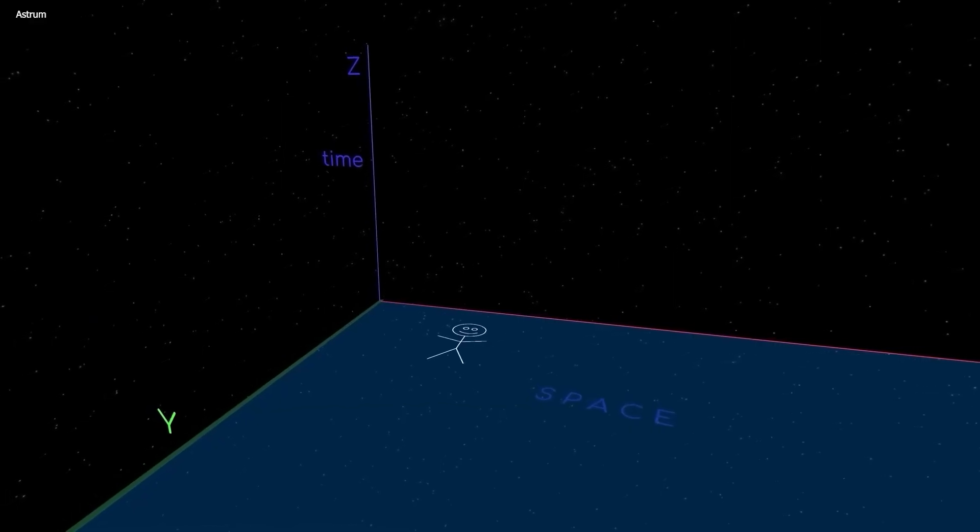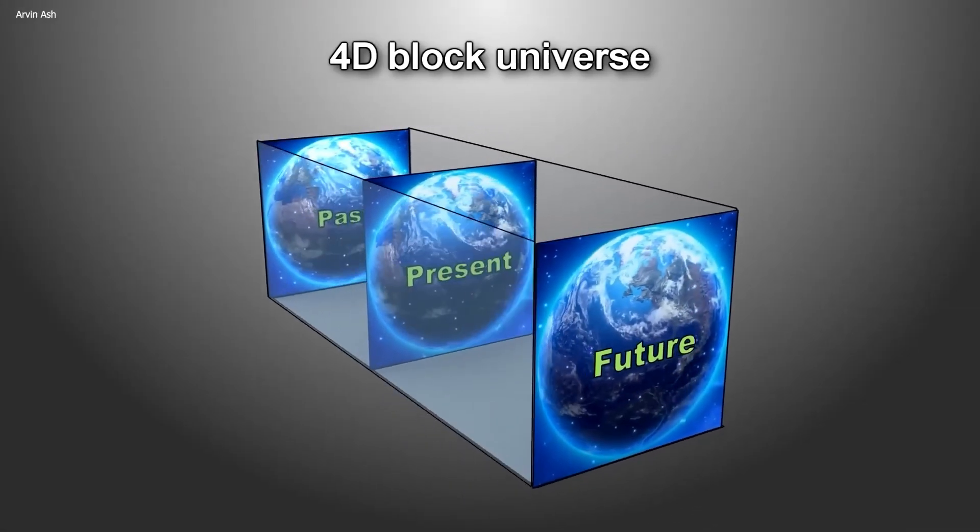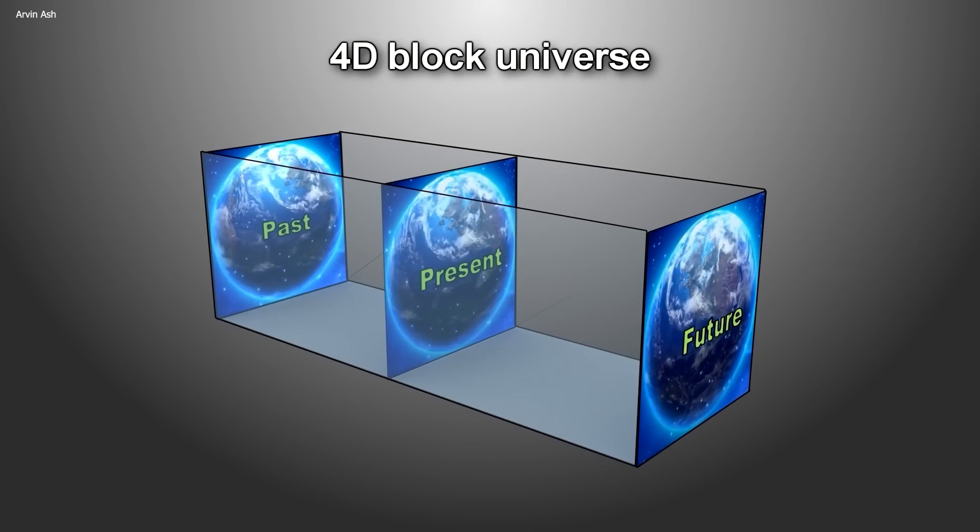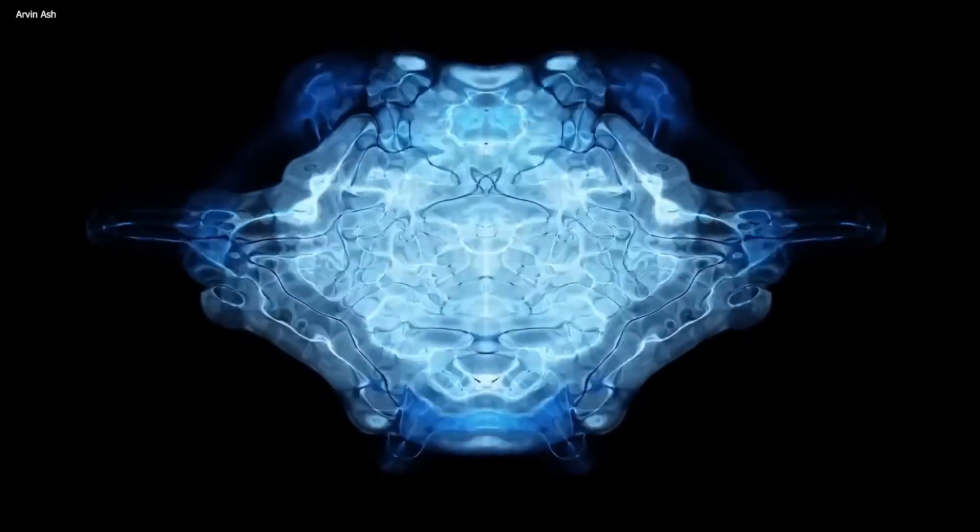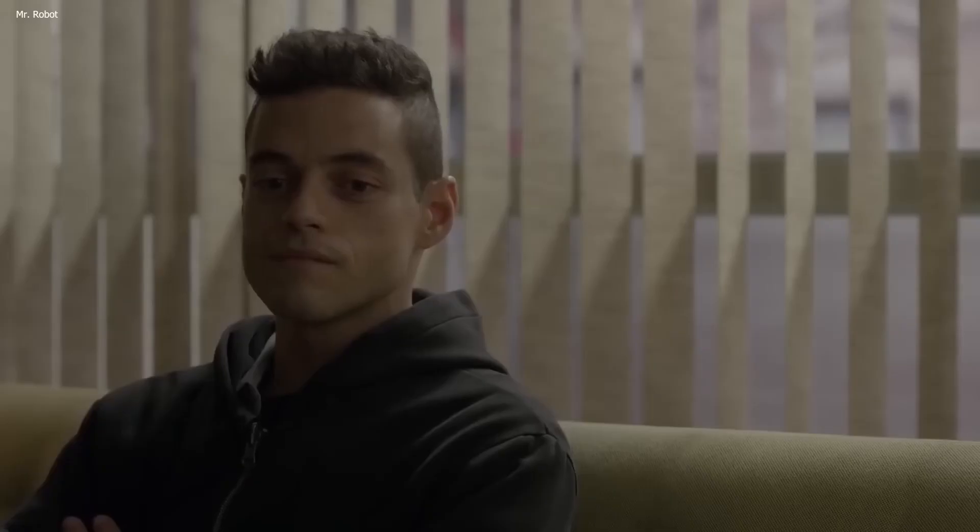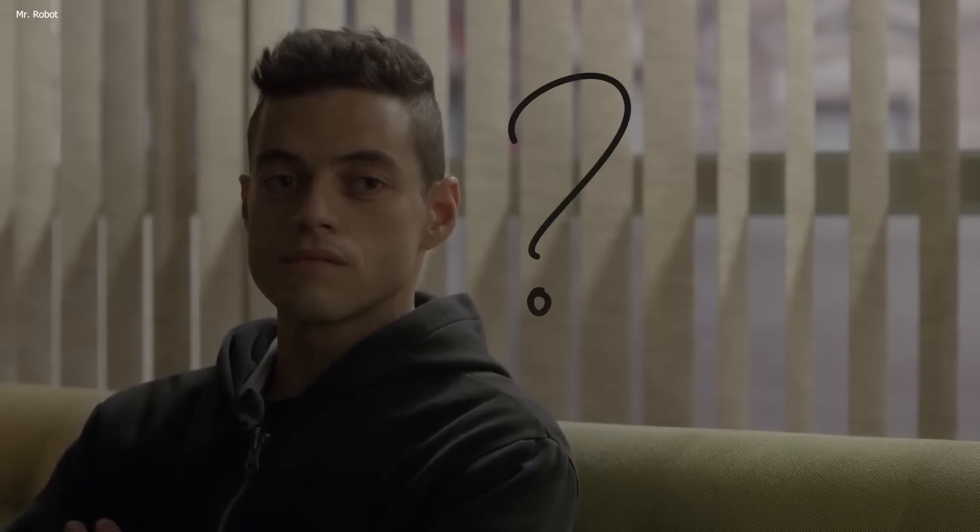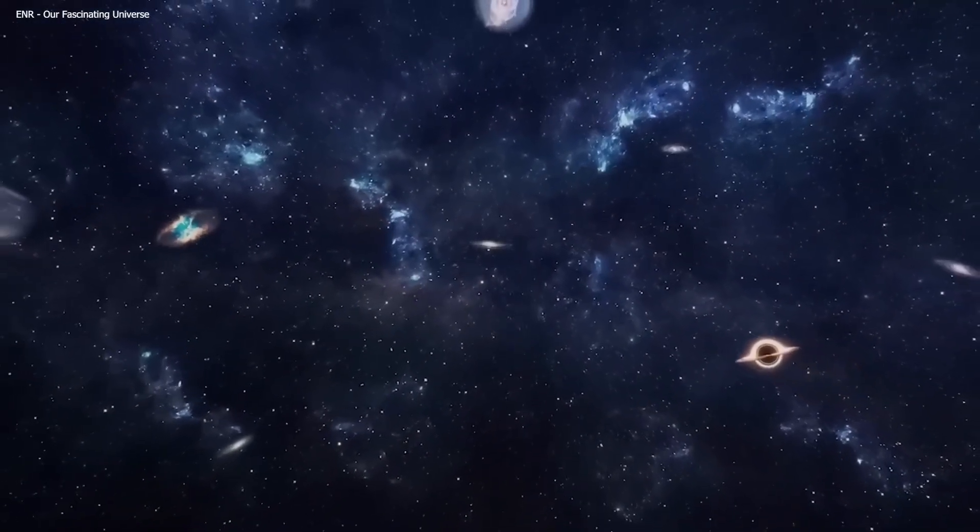MIT physicist Max Tegmark explained this concept beautifully. He said we could view our reality as a three-dimensional place where stuff happens over time, or a four-dimensional place where nothing happens. Everything just is. If it's the latter, then time is an illusion because nothing really changes. Everything, past, present, and future, is always there. It's certainly a lot to wrap your head around, but isn't it fascinating to ponder such questions? It shows just how frighteningly magical and mysterious our universe truly is.